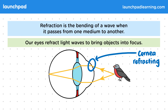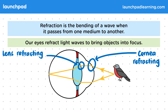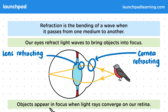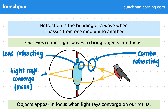The cornea always refracts by the same amount to focus light into the pupil. The role of the lens is then to change its shape to alter the refraction so that light waves converge on the retina. Objects appear in focus when light rays converge on the retina — you can see the yellow line representing the light has met at a single point. Objects will appear blurry if the light rays don't converge on the retina like this.